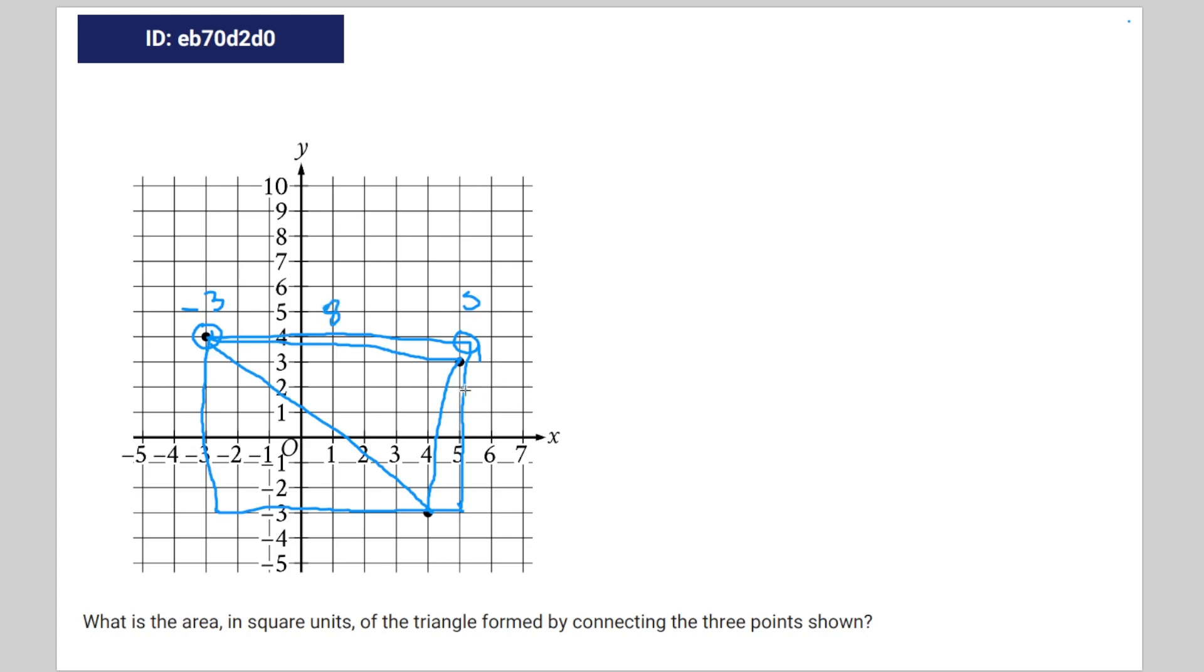I have to find the distance between this point and this point—one. Distance between this point—three, and the distance between this point—three, which is going to be six. This is negative three to four, so seven, and negative three to four, so also seven.